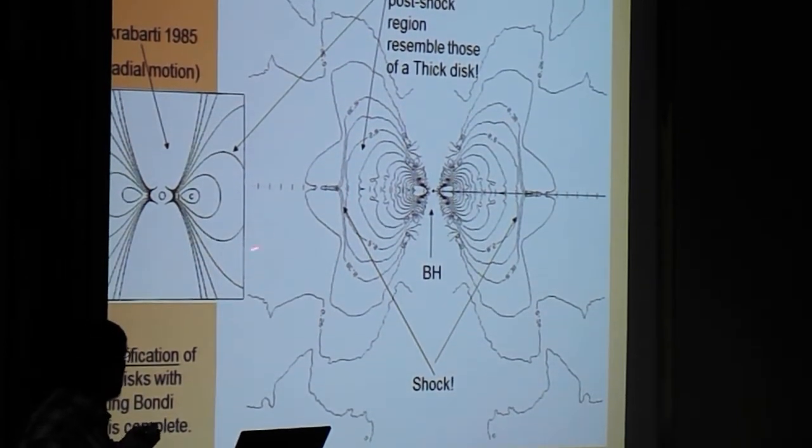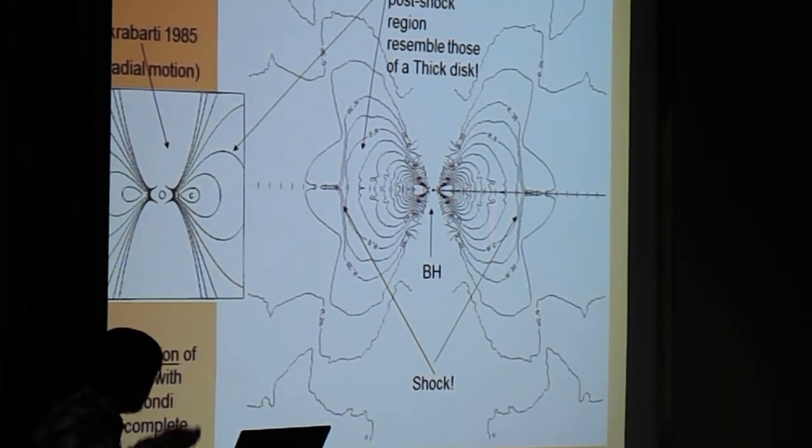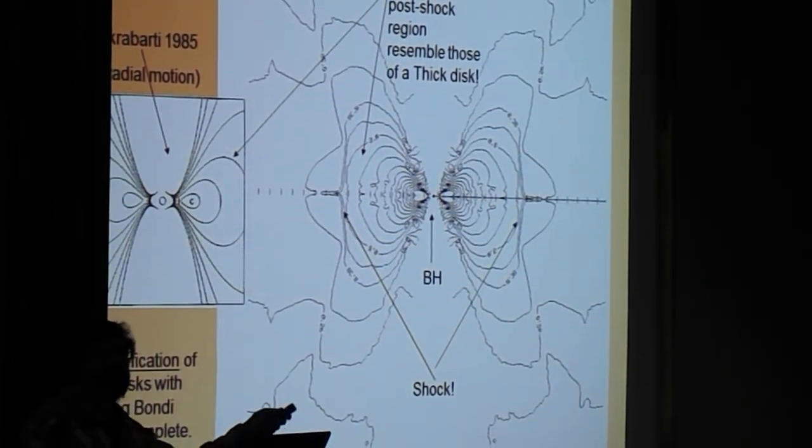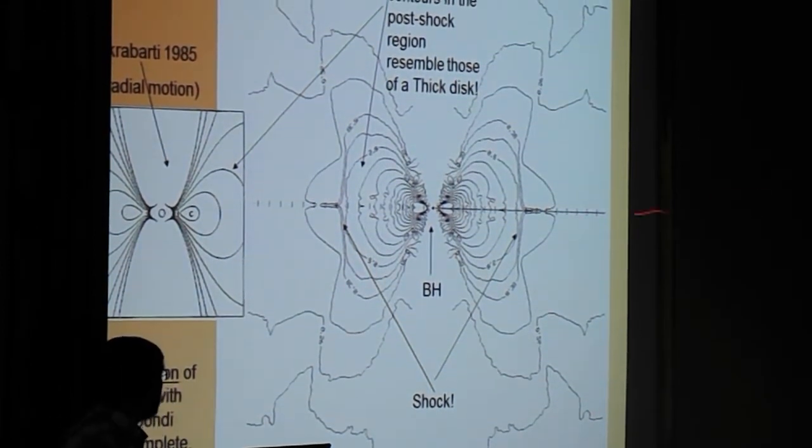So, what happened? If we started with the disk, with a large amount of advection, and everything. Then, in the shock, suddenly, the velocity component, went down, by factor of 4, or factor of 7, depending on the adiabatic index.